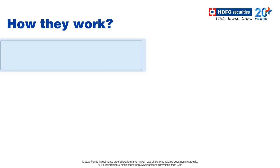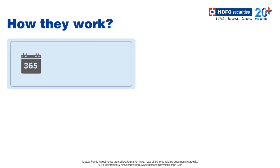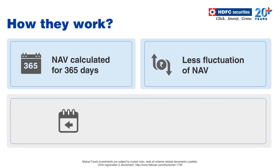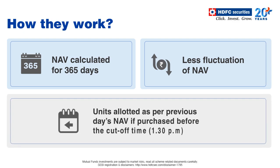Net asset value for liquid funds is calculated for 365 days instead of only business days and does not fluctuate much. Units are allotted as per the previous day's NAV for applications received before 1:30 PM.